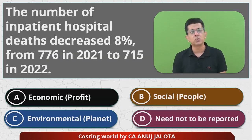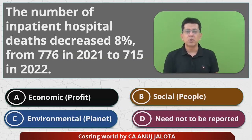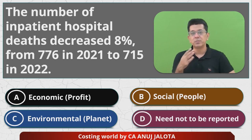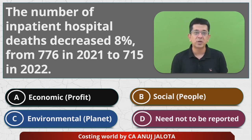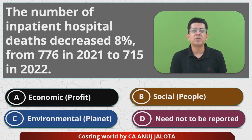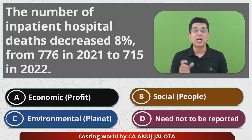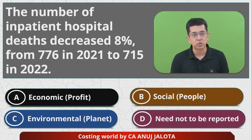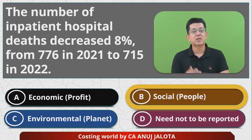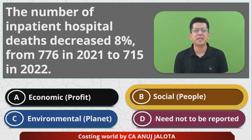So as far as this question goes: the number of inpatient deaths decreased from 776 to 715 — now this has to be reported under which category. It is concerned with your customers — the hospital's customers — so therefore this should be reported under the People criteria. The correct answer is option B. I'll see you all next time with another MCQ. Bye, take care.